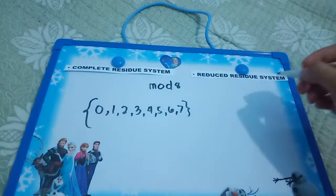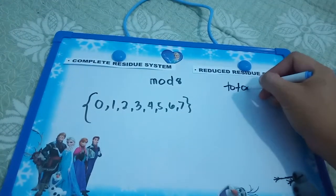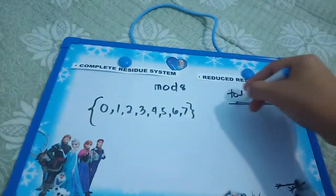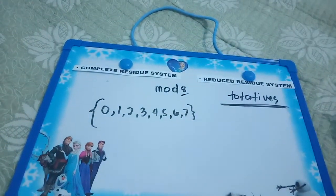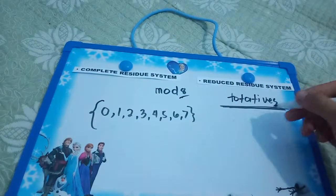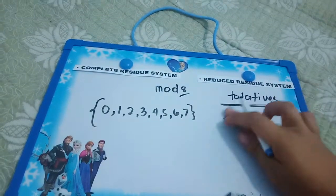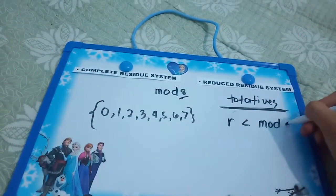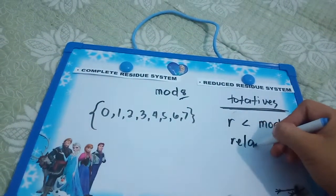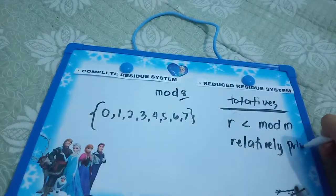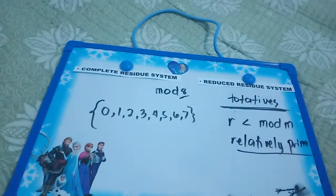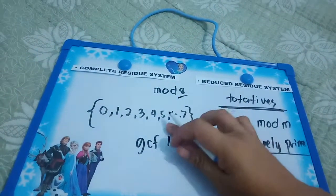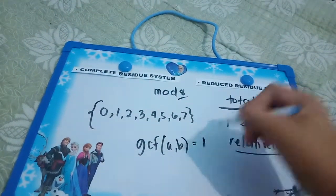The reduced residual system talks about totatives. What is totatives? Totatives are those remainders, or the possible remainders of an integer of our mod m, which are lesser than our mod m. Totatives are the residue system lesser than our mod m and that are relatively prime, or what we call co-prime. When we say co-prime or relatively prime, the GCF or the greatest common factor of two numbers is only 1.